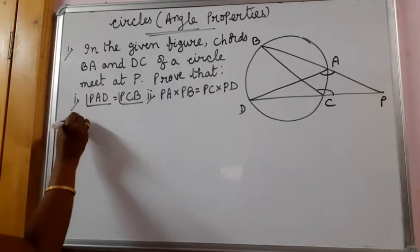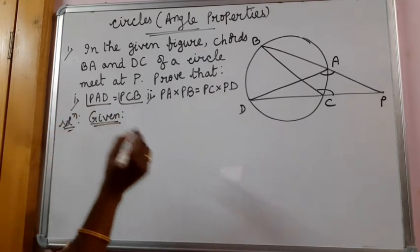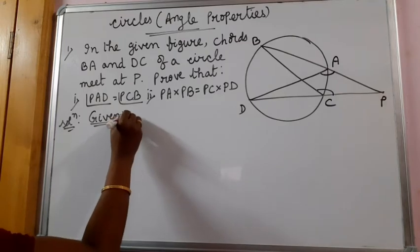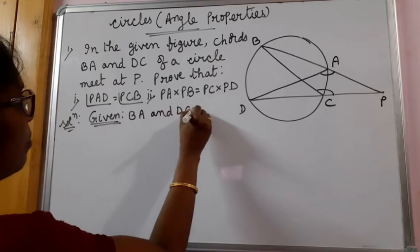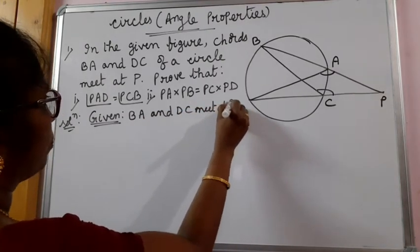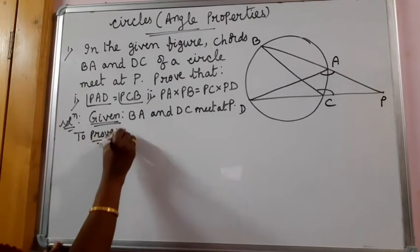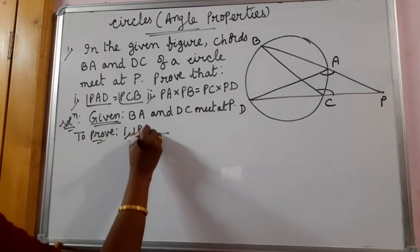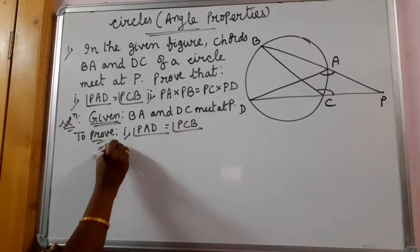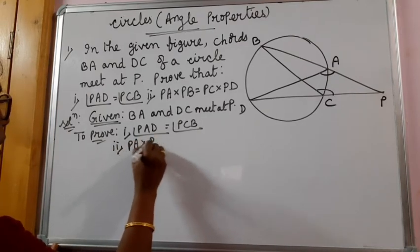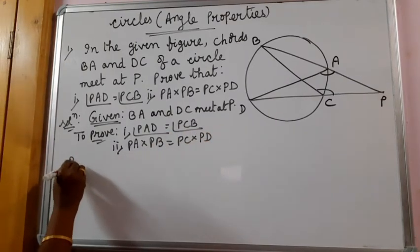For any proof question, you know the steps you have to write: what is given, what to prove, and the proof steps. Given is that BA and DC meet at P. You have to prove two things. First: angle PAD is equal to angle PCB. Second: PA into PB is equal to PC into PD. Very simple question.